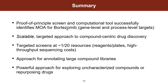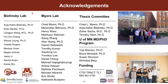To summarize, CGTarget applied to this proof of principle screen has successfully identified gene-level and process-level targets that we expect for bortezomib. This is a scalable way towards compound-centric drug discovery, and what's nice about these targeted screens is that you can do them at 1/20th of the resource cost of genome-wide screens, enabling these screens to be more available to more labs. This is a possible approach for annotating large compound libraries, like the work done in yeast, and also a powerful approach for exploring uncharacterized compounds or repurposing drugs. I'd like to thank members from both the Belinsky and Myers labs, as well as my funding sources from the CTSI-TL1 program, the NIH, and CIF-30. During the live Q&A, I'd be happy to take any questions. Thank you for your time.